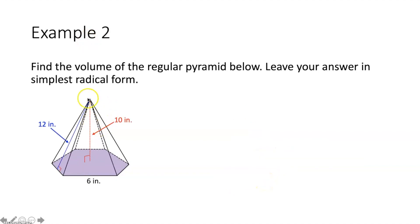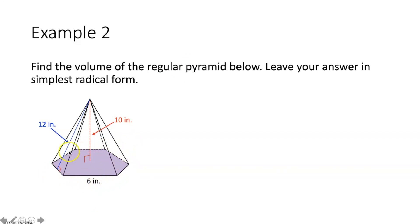Example 2: find the volume of this regular hexagonal pyramid. Volume equals one-third B times H. The base is a regular hexagon, so B equals one-half times apothem times perimeter. The perimeter is 6 inches times 6 sides, which equals 36 inches. However, the apothem is not given, so we need to find it first.